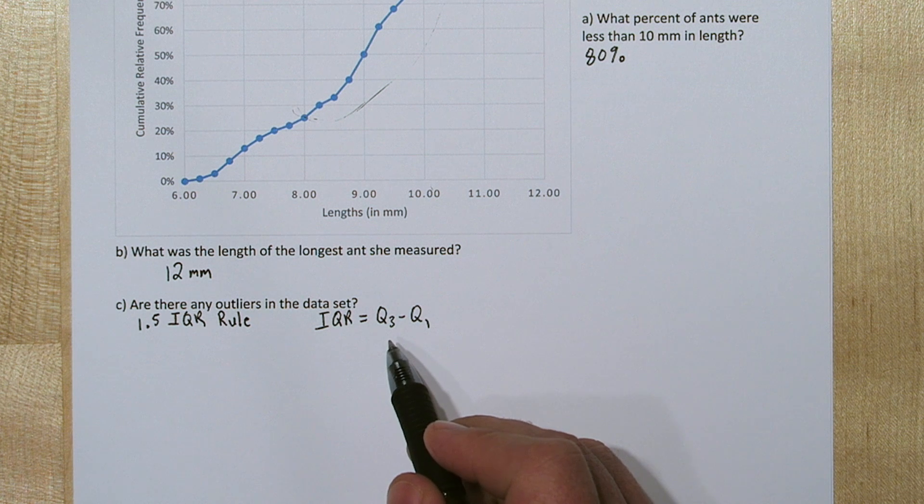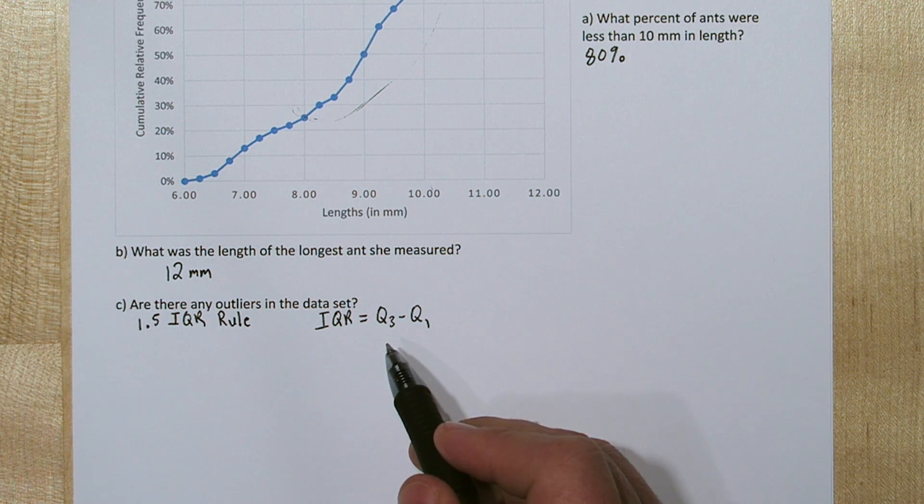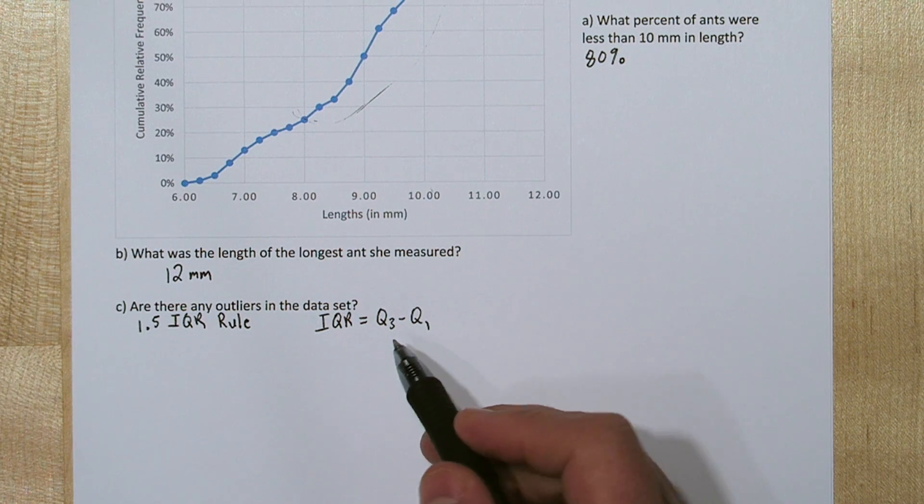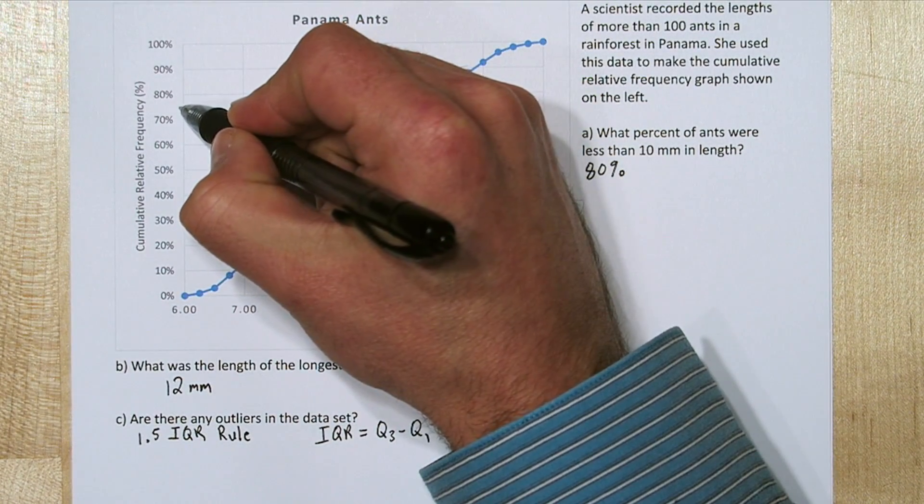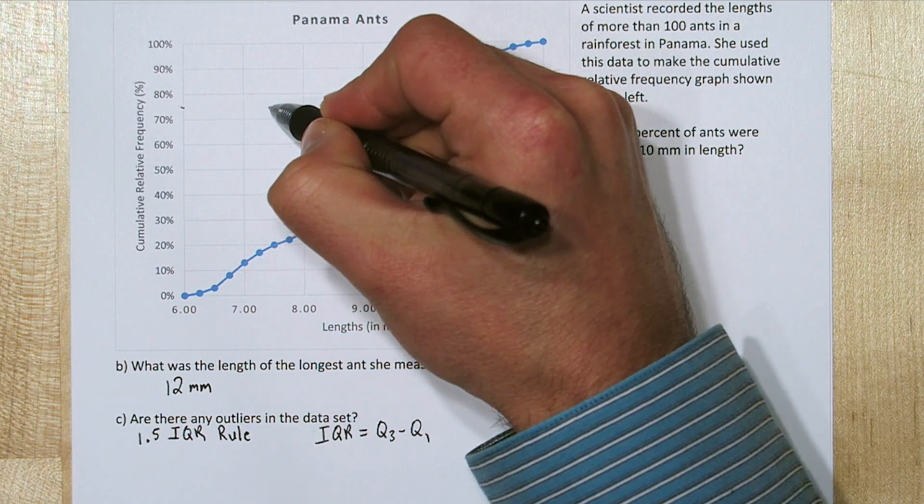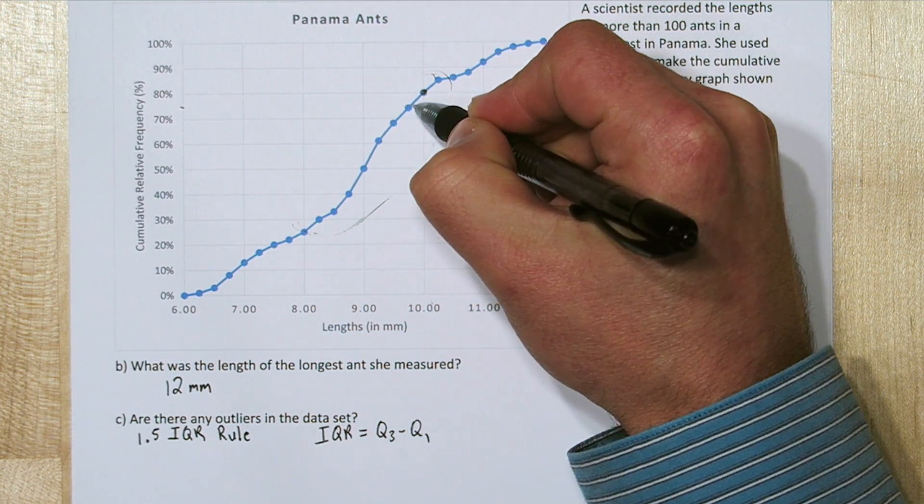So quartile 3 is the ant length that cuts off the lower 75% of ant lengths. So if we go to 75%, about right here, and we just go over until we find where it intersects the ogive, it looks like about 9.75 millimeters.